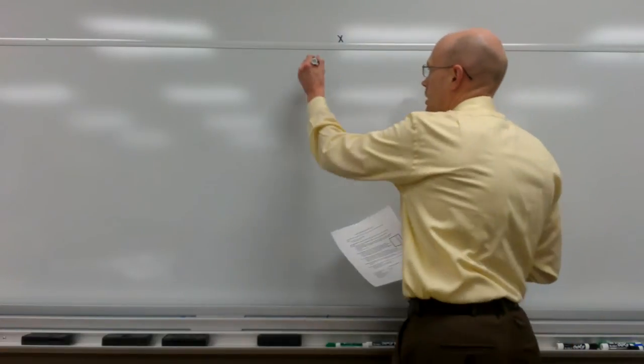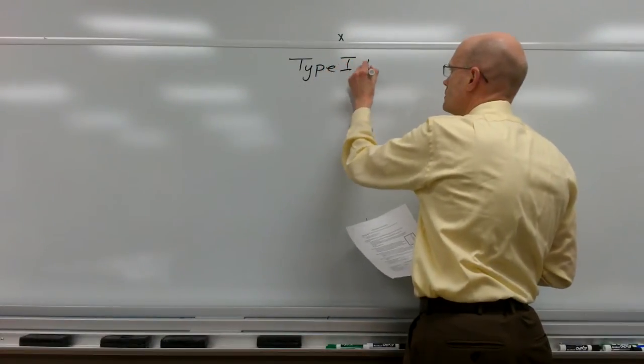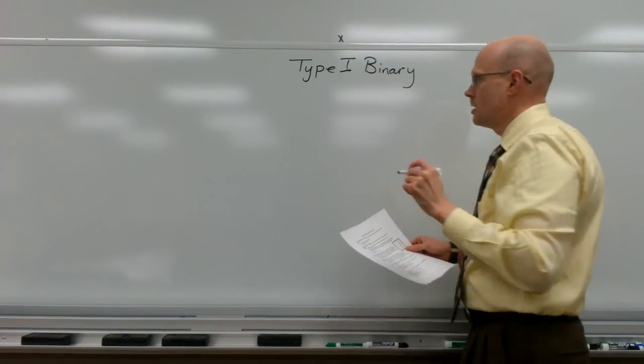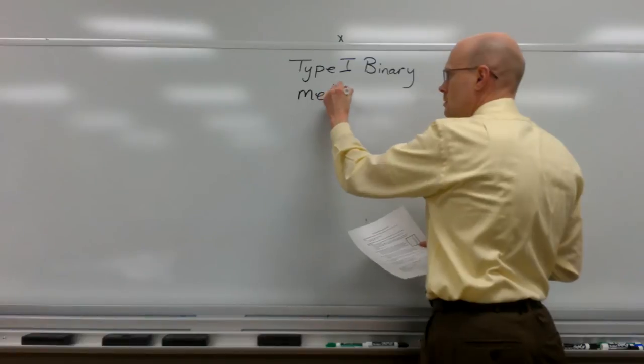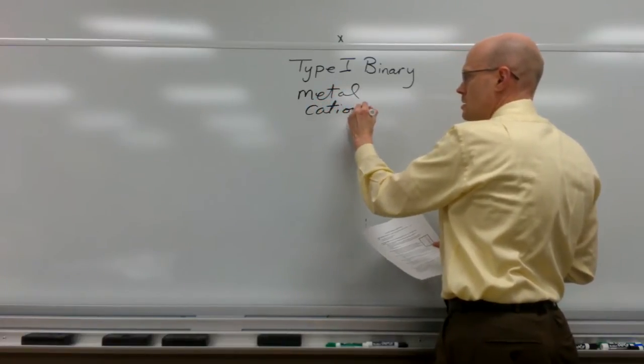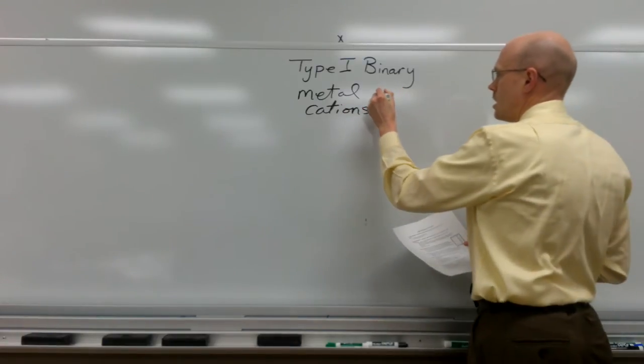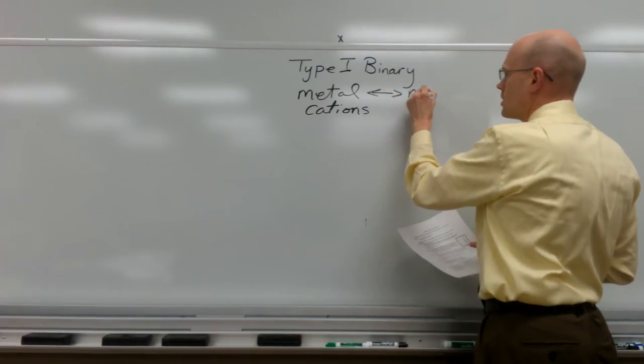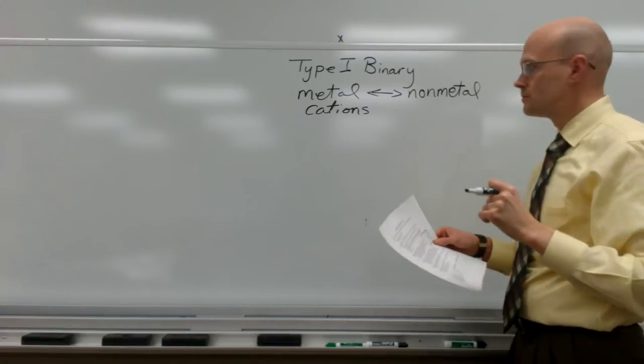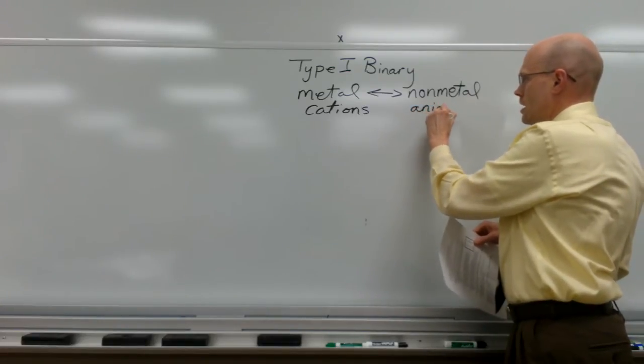Type 1 Binary compounds are those compounds that are made using a metal, which, remember, are typically cations. Those are positively charged ions. So a metal bonded with a nonmetal. And nonmetals are anions, ions with a negative charge.